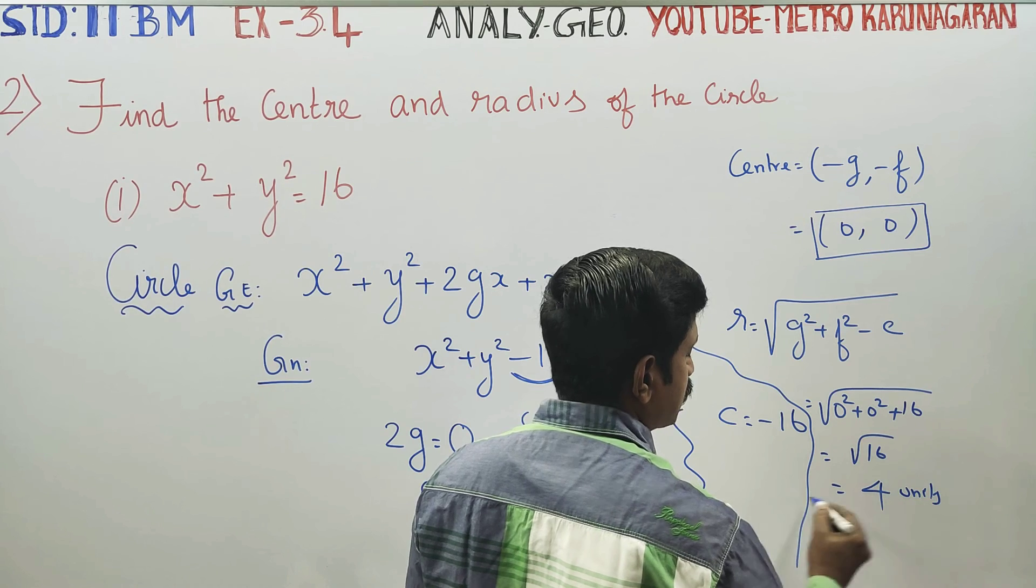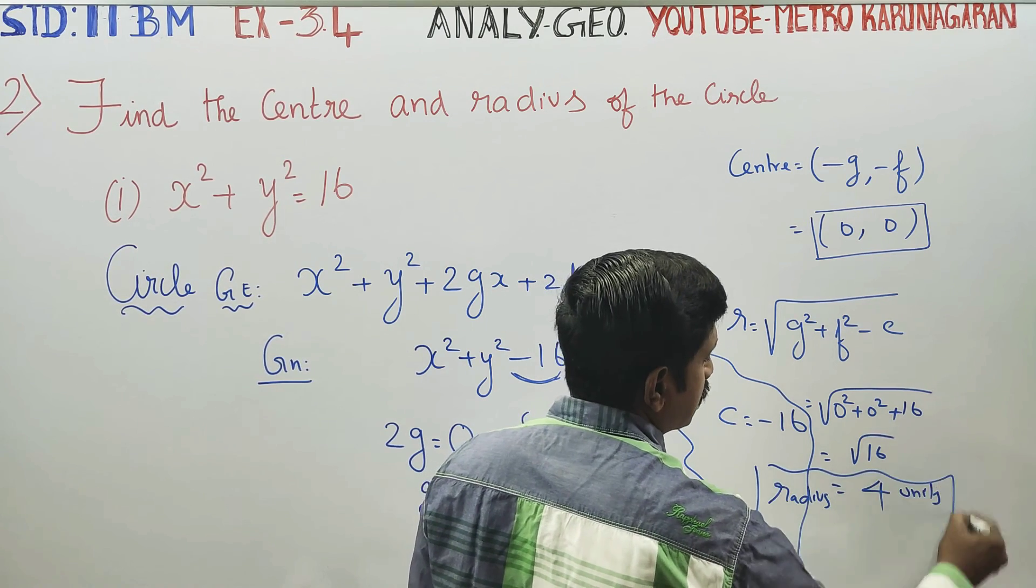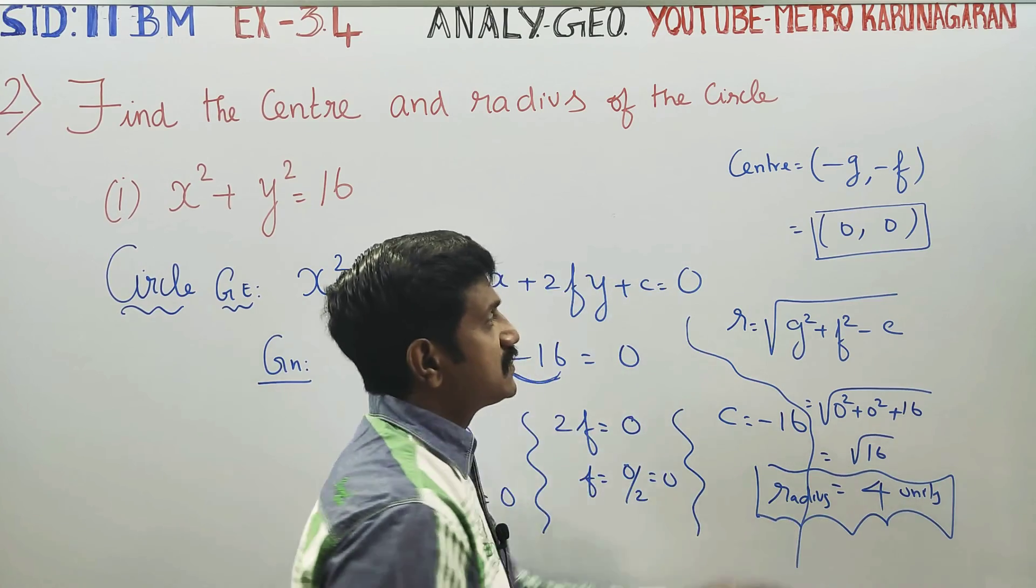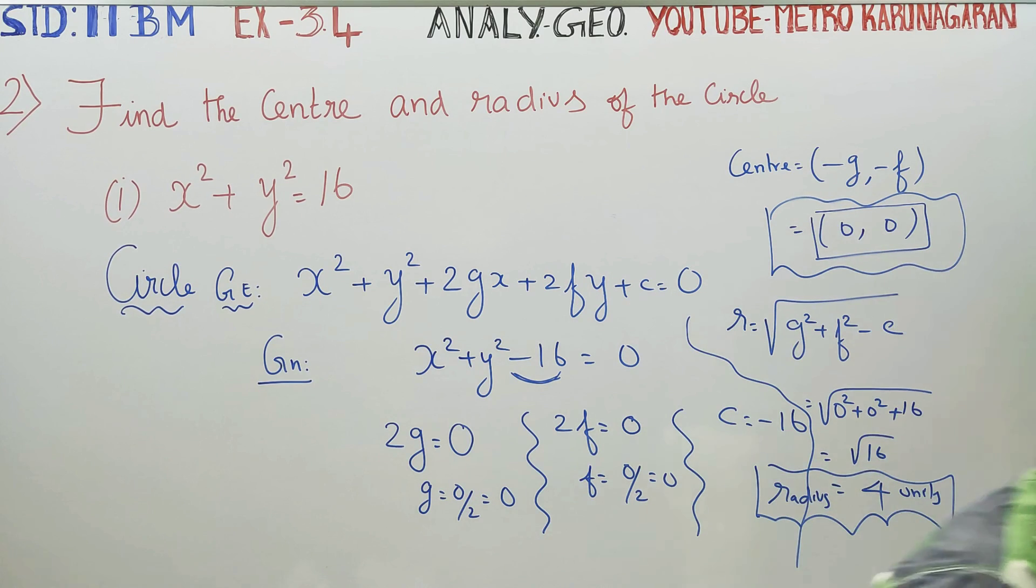4 units. This is the radius. The radius is 4 units. The center is 0, 0 is my center. This is the center. Thank you.